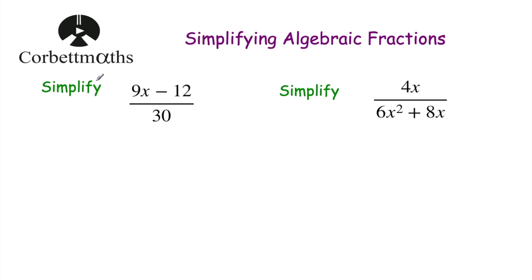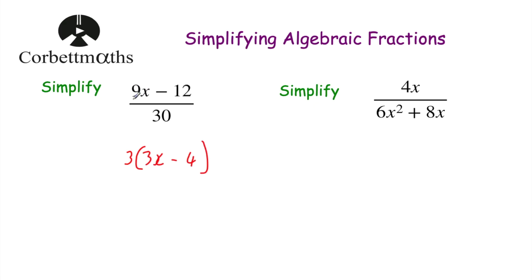Let's have a look at our first question. Simplify 9x subtract 12, all over 30. The first thing I would do is factorise the numerator, because we've got 9x subtract 12 and both of those terms are divisible by 3. So we can take a 3 out, giving us 3 bracket 3x minus 4 — that's just basic factorisation.